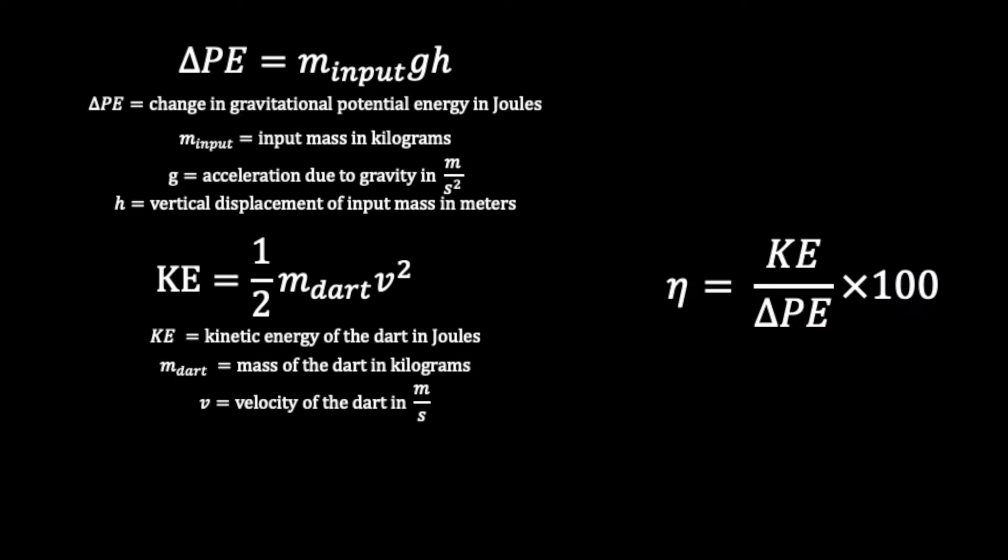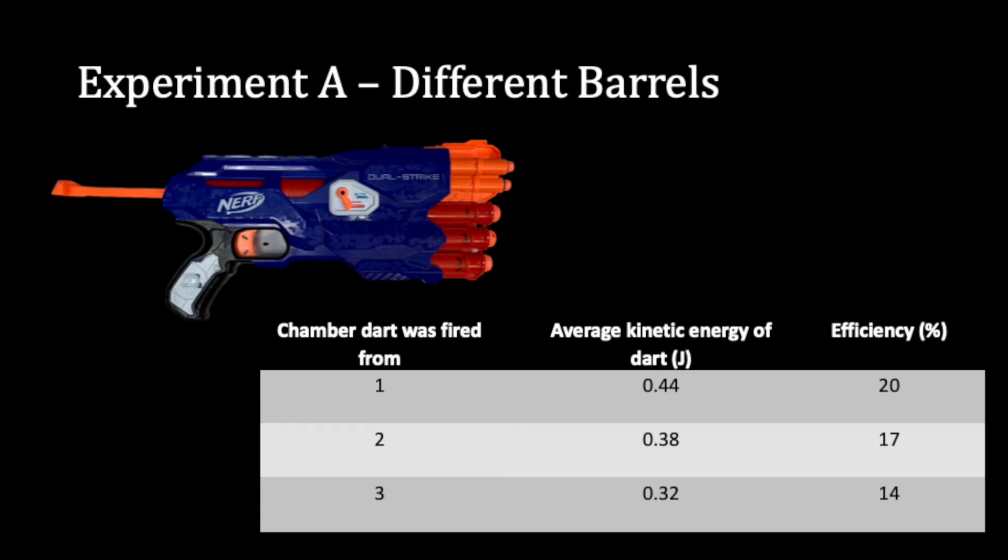Each experiment was conducted five times in order to achieve an average value and reduce uncertainty. The first experiment tested the different chambers the Megadarts could be shot from with all other chambers empty. The most efficient chamber the Megadart could be shot from was Chamber 1.